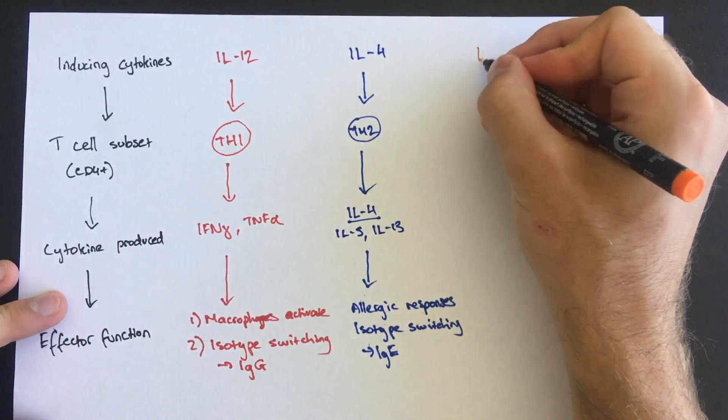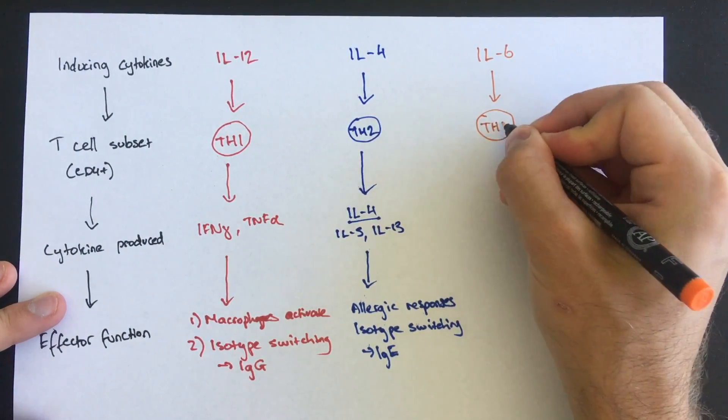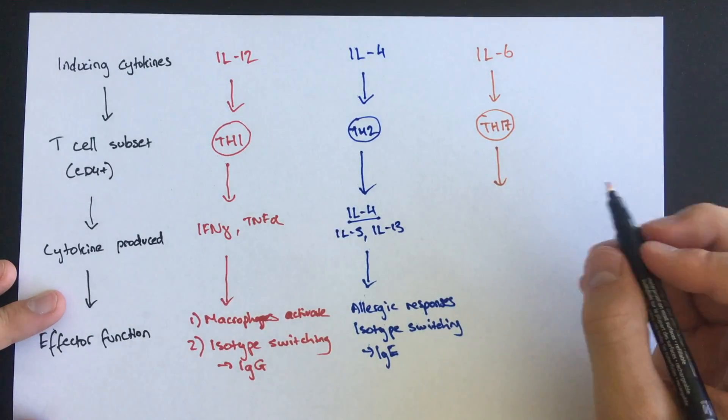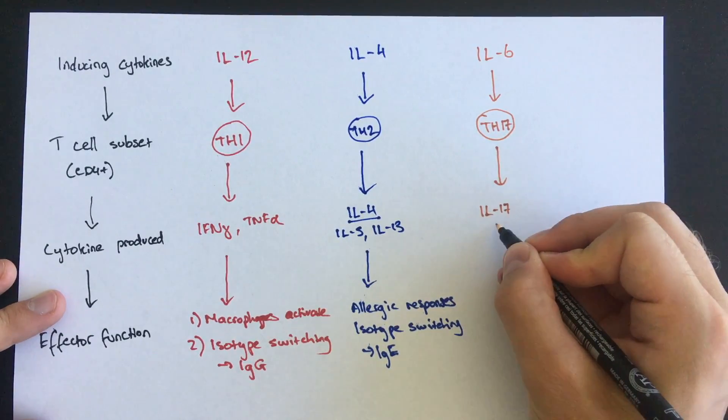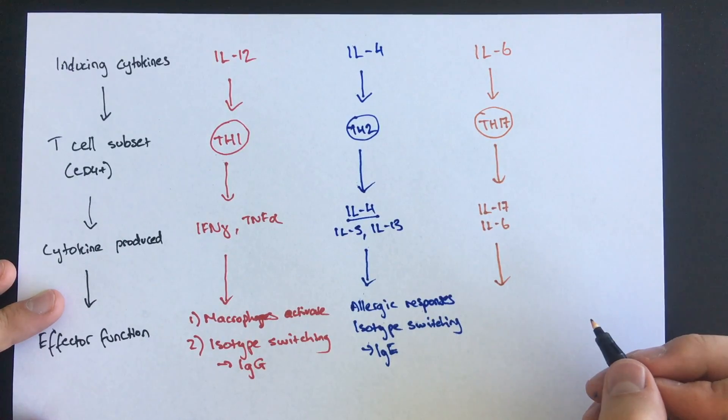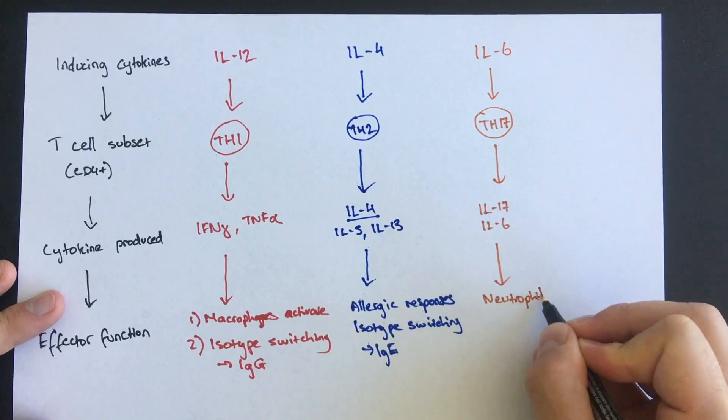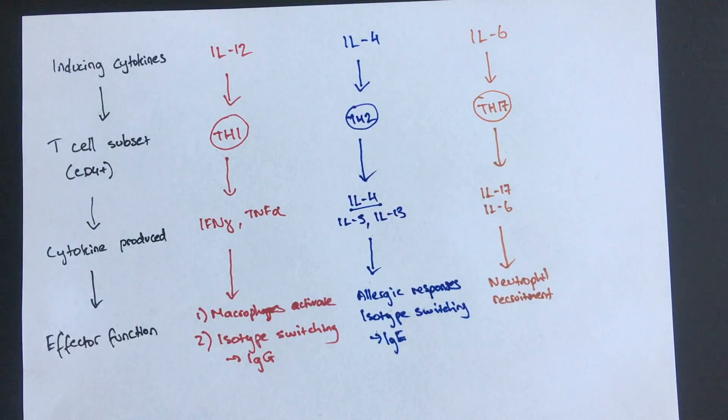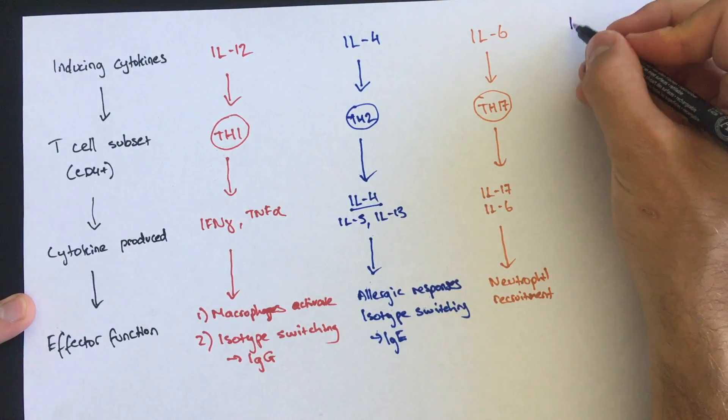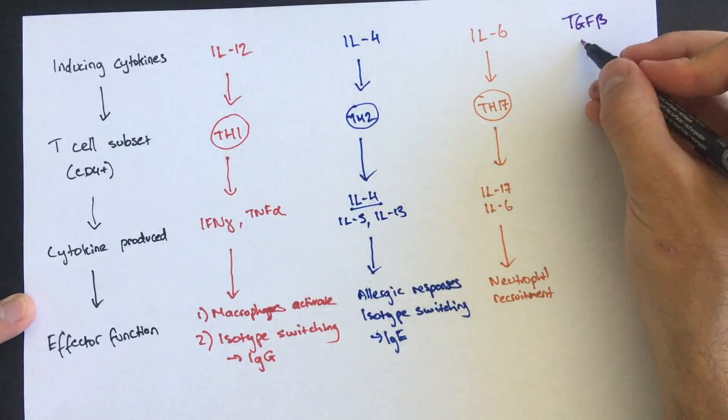Another subset are TH17 cells, which are induced by interleukin-6 or TGF-beta. TH17 produces interleukin-17, which helps responses to extracellular pathogens by recruiting neutrophils.